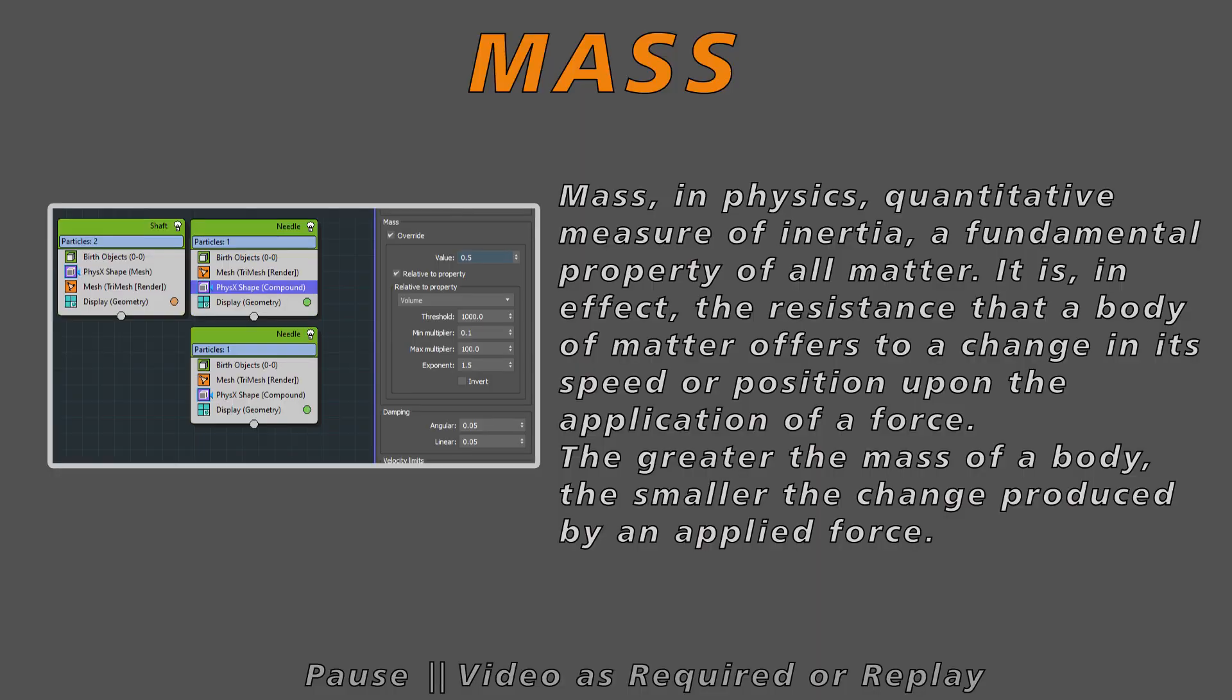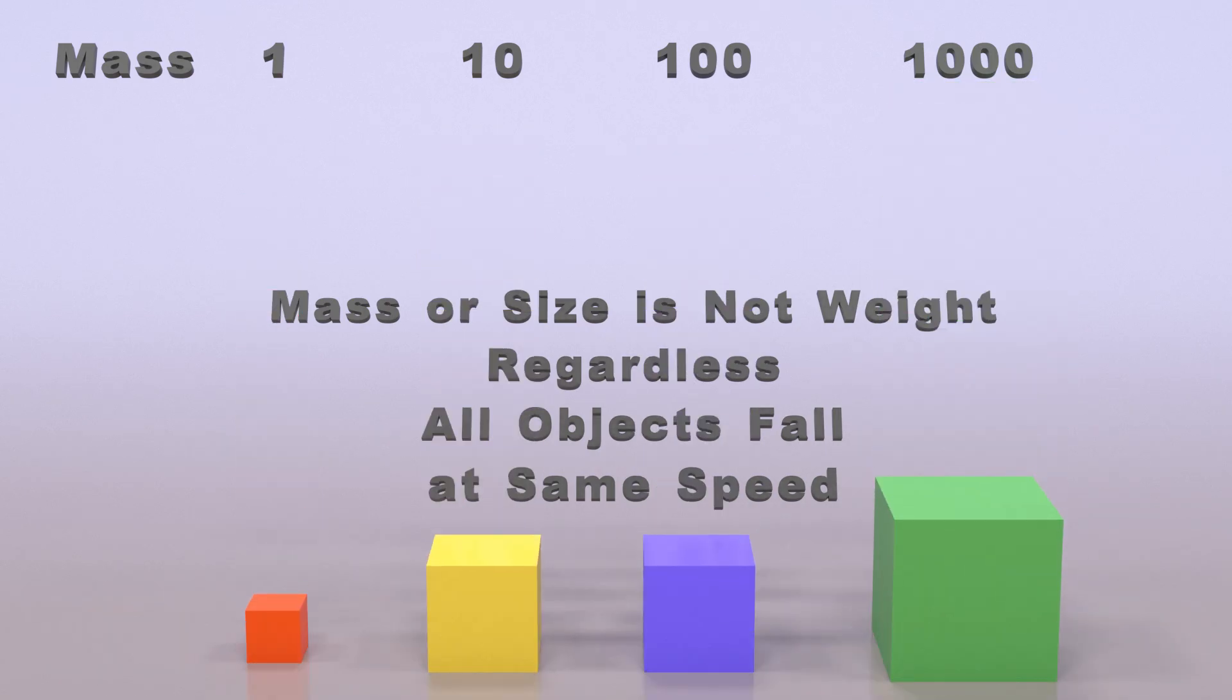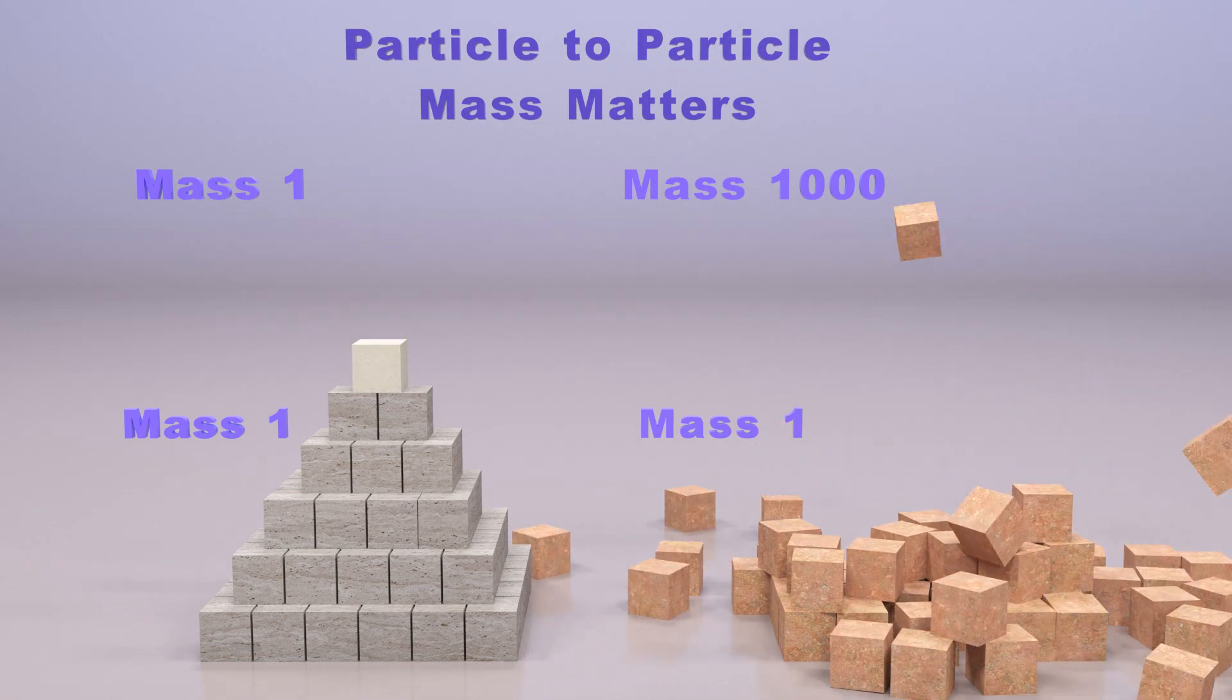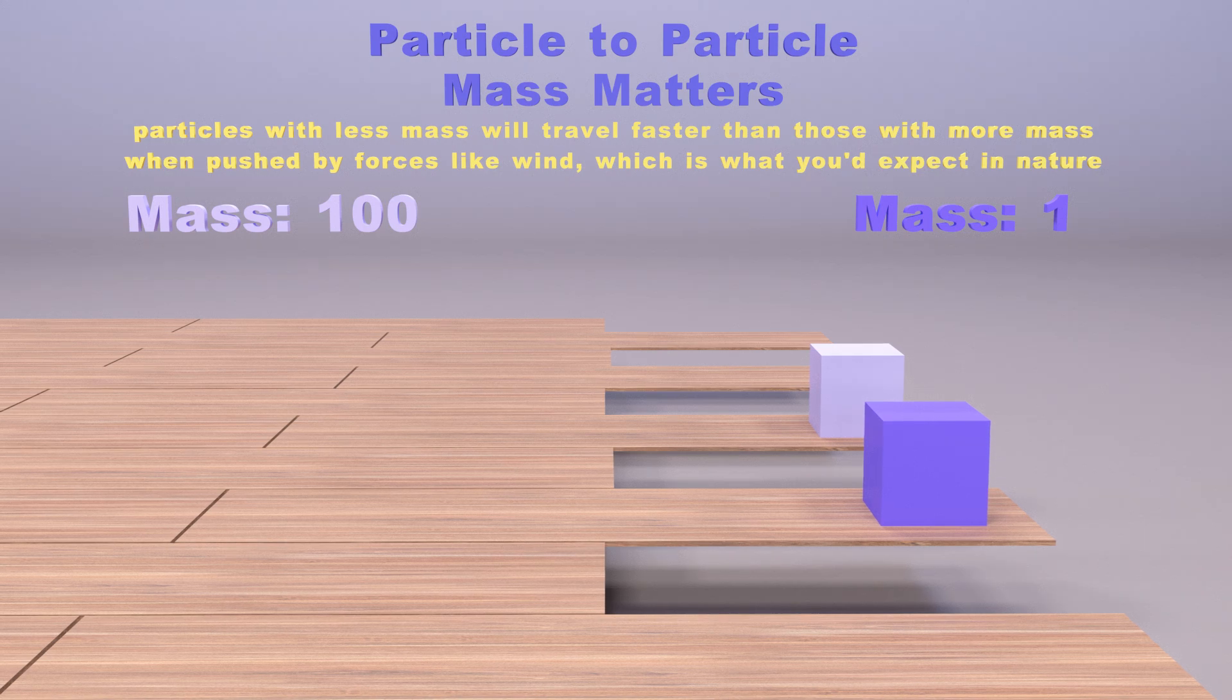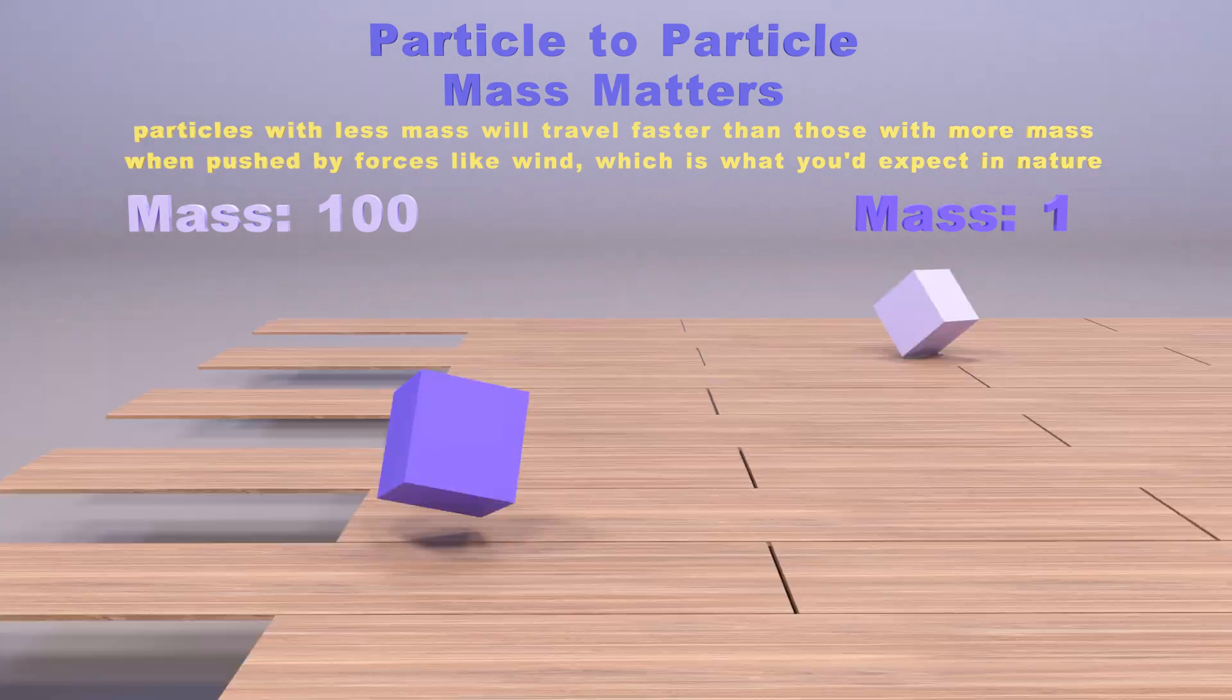One of the mistakes I made at the beginning was thinking mass is weight. And somehow when I adjust the weight, the mass, I get this great weight change. Mass is really a setting that kind of changes how two particles behave between each other. And then you see the supposed weight difference between two different particles. It can be used for great effect by realizing that mass is between two particles.